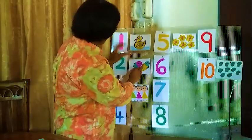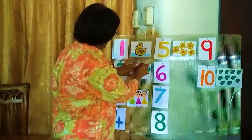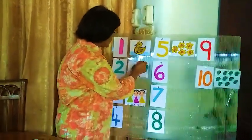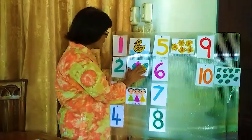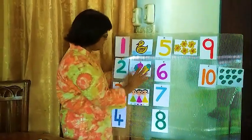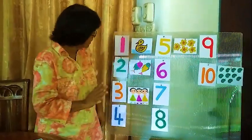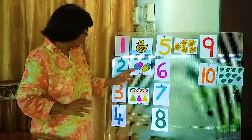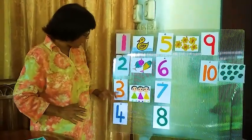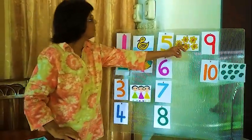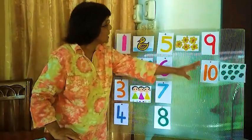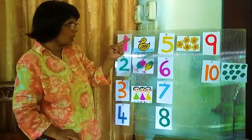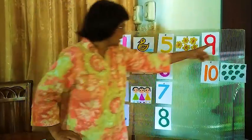2 fish — number 2. 2 fish. 1 duck, 2 fish, 3 girls, 5 flowers, 10 mangoes. Now we will go to number 9.